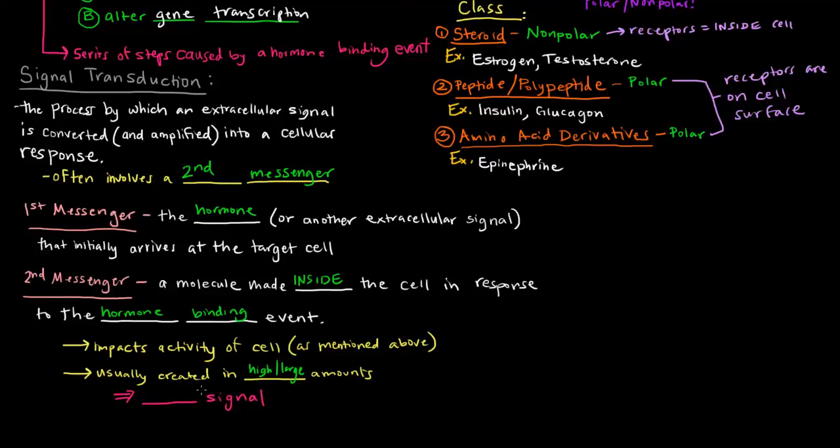One hormone binds and then many second messengers are created. These many second messengers can go on and activate or inactivate certain things in the cell. Because many second messengers are made in high or large amounts, they can amplify the signal. Essentially, one hormone binding event can trigger a great response because the second messengers amplify that signal.